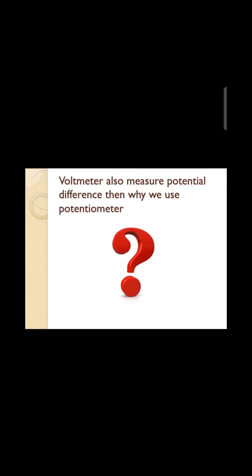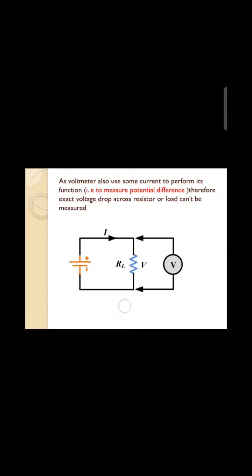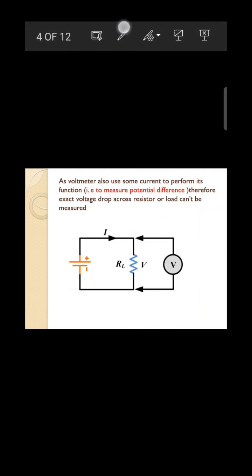The question arises: a voltmeter can also measure potential difference, so why use a potentiometer? Because a voltmeter itself consumes some current for its own working, so the exact current from the source is not fully available and the exact voltage drop is not obtained. That is why we use a potentiometer — because it is based on the null deflection method.